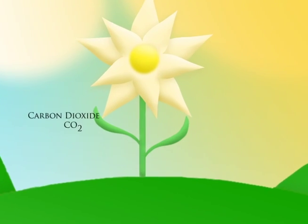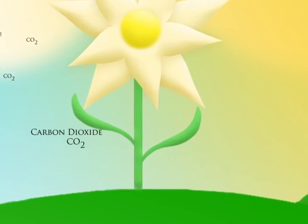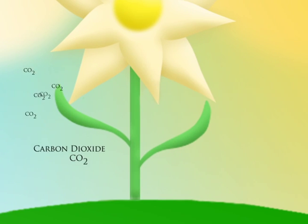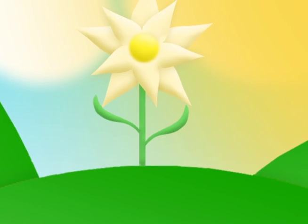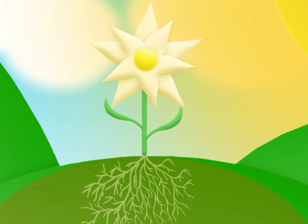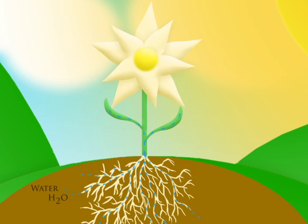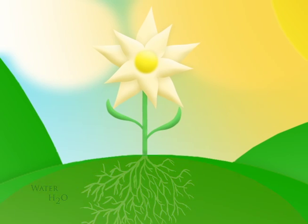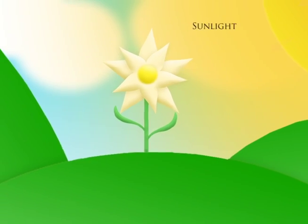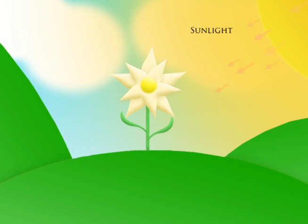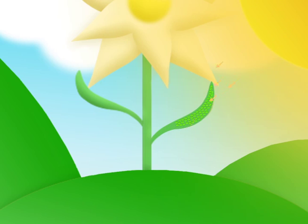Carbon dioxide is absorbed into the leaves of the plant. Water is absorbed into the plant through the roots. The sunlight is absorbed by the leaf into the chloroplast by means of chlorophyll.